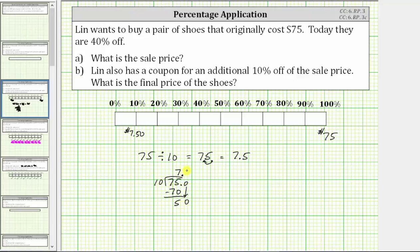Determine how many 10s in 50, which is 5. 5 times 10 is 50. Subtract. The difference is 0. Again, giving us a quotient of 7.5 or $7.50.